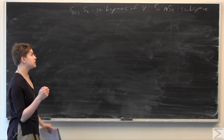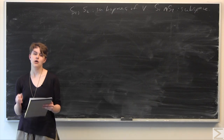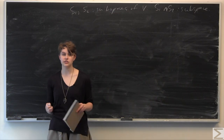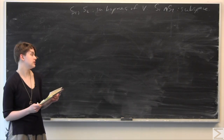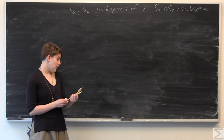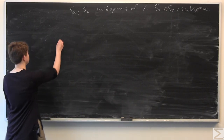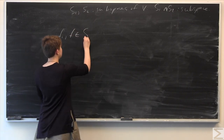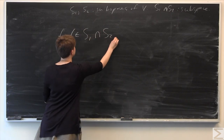In order to show that S1 intersect S2 is a subspace of V, we need to show that S1 intersect S2 is closed under scalar addition and closed under scalar multiplication. So we choose some vectors F1 and F2 in the space S1 intersect S2.